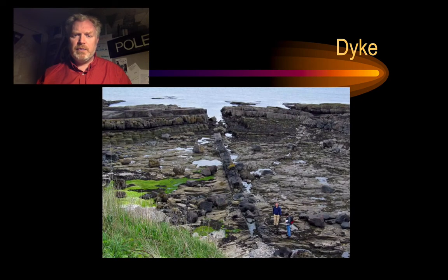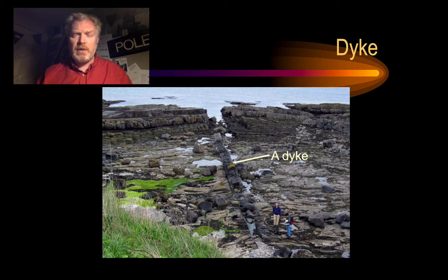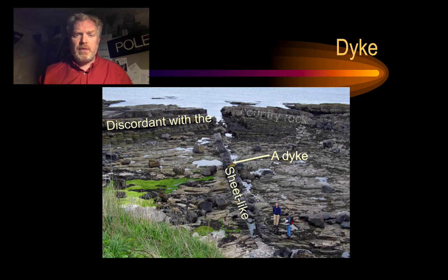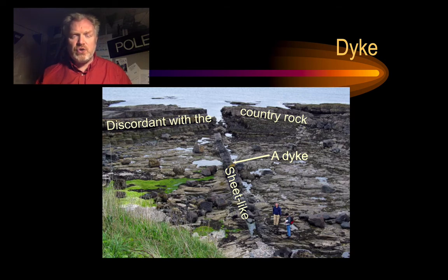Let's start with a dyke example. We can see in this photograph of the foreshore that running down the middle is a structure that doesn't follow the rest of the beds exposed — this is a dyke. If we went there in the field, we'd be able to identify this as an igneous rock. You can see it's a sheet-like body, and this dyke is discordant with the country rock — it's cutting across it.